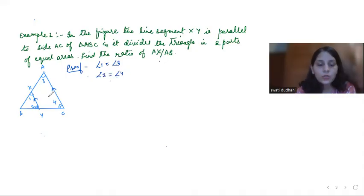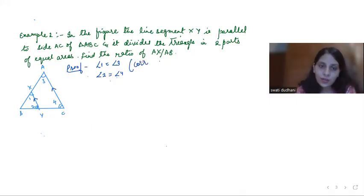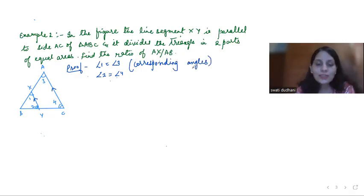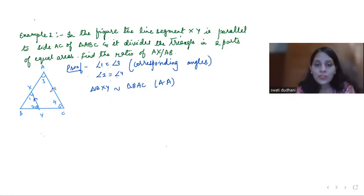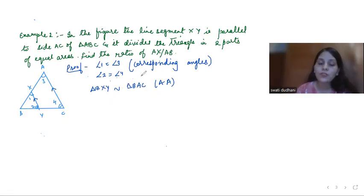Since XY is parallel to AC, I can write angle 1 equals angle 3 and angle 2 equals angle 4, because they are corresponding angles — corresponding angles are always equal. Now considering the two triangles, triangle BXY and triangle BAC become similar by AA similarity, because we have angle 1 equal to angle 3 and angle 2 equal to angle 4. So we have proved these two triangles are similar.